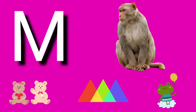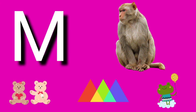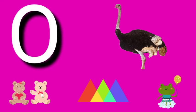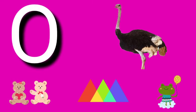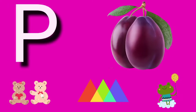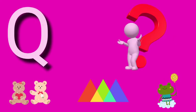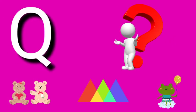M for monkey, monkey means bandar. N for nine, nine means nau. O for ostrich, ostrich means sutur murg. P for plum, plum means ber. Q for question, question means question.